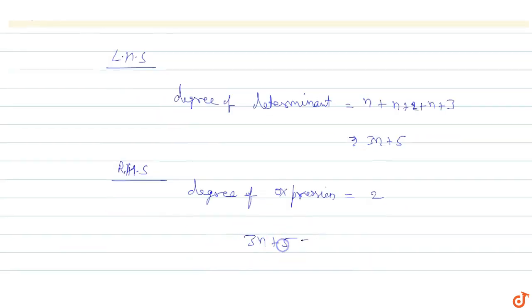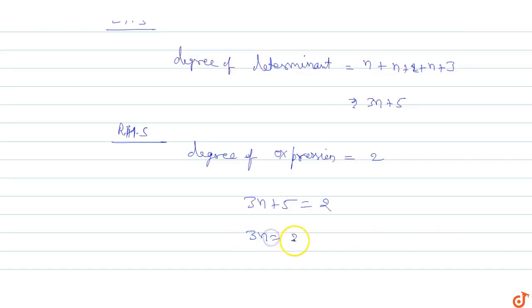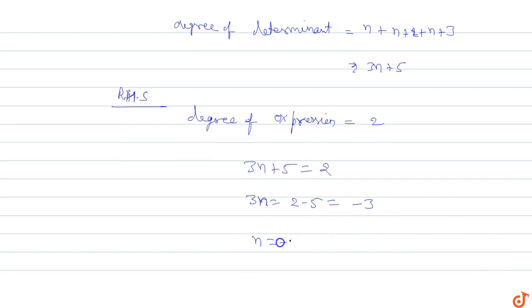3n plus 5 equals to 2. 3n equals to 2 minus 5 which equals to minus 3. So n equals to minus 1.